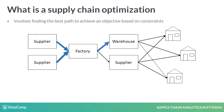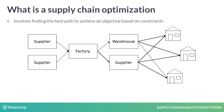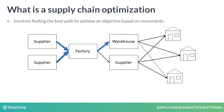When fulfilling a customer's request, there are often multiple routes through the supply chain. Supply chain optimization attempts to find the best path to achieve an objective based on constraints. For example, a production plan is limited by the production capacity available, or a logistics plan might be limited by how much truck capacity is available. Supply chain optimization attempts to use the different resources available to achieve an objective. That objective could be focused on delivering the lowest cost or highest service.